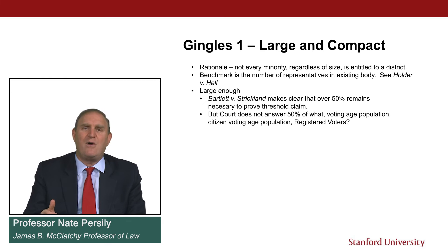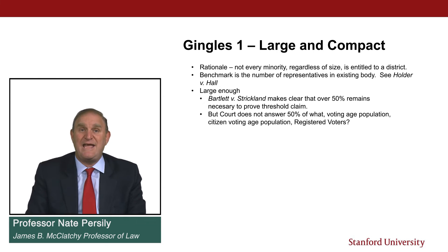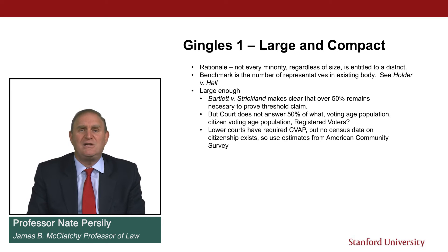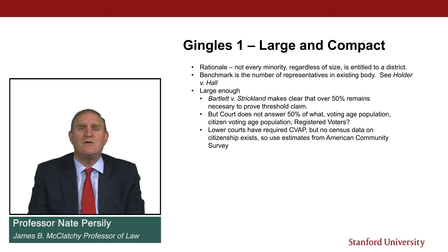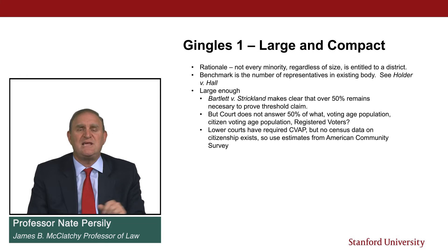The court doesn't specify 50% of what — whether voting age population, total population, citizen voting age population, or registered voters. Many lower courts have said attention should be paid to citizen voting age population. Citizen voting age population is not provided directly by the Census Bureau; it must be derived from surveys like the American Community Survey. The logic is that the word 'citizen' appears in Section 2 of the Voting Rights Act, though there is no clear Supreme Court pronouncement settling this question.